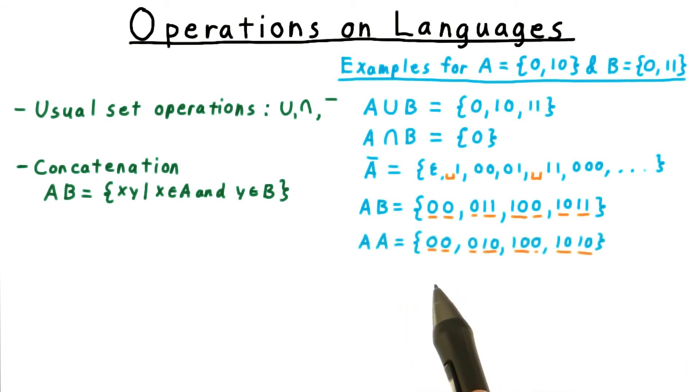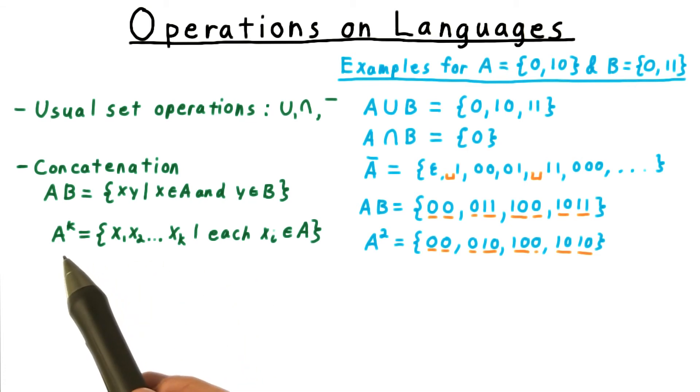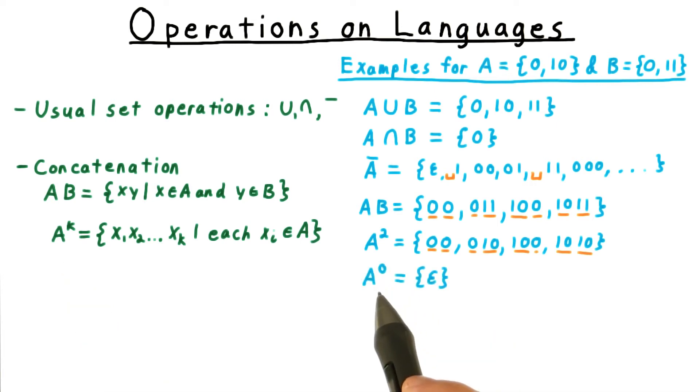Of course, we can also concatenate a language with itself, as I've done here in this example. Instead of writing AA, we often write A squared. And in general, when we want to concatenate a language with itself k times, we write A to the kth power. Note that for k equals 0, this is defined as the language containing exactly the empty string.